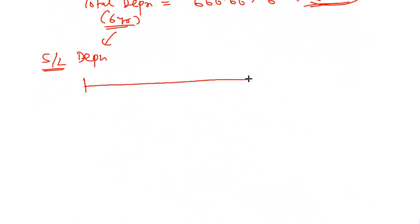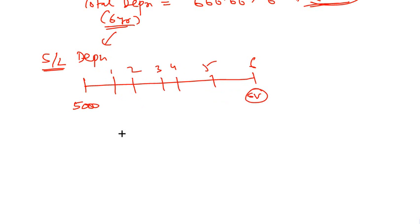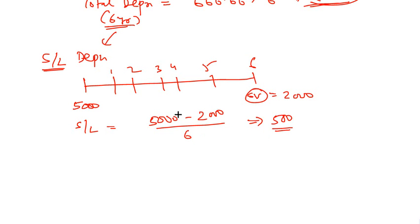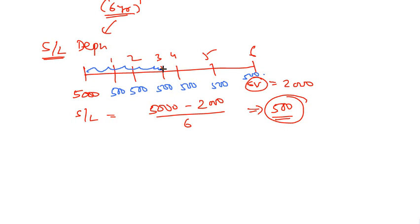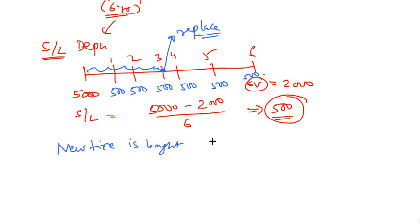Now revisit straight-line depreciation: we bought the vehicle for $5,000, salvage value $2,000, depreciated over six years at $500 per year. However, this is not entirely correct because at $500 per year, the first tire gets exhausted at the end of year three and you have to replace the tire in year four — a new tire is bought at the start of year four.